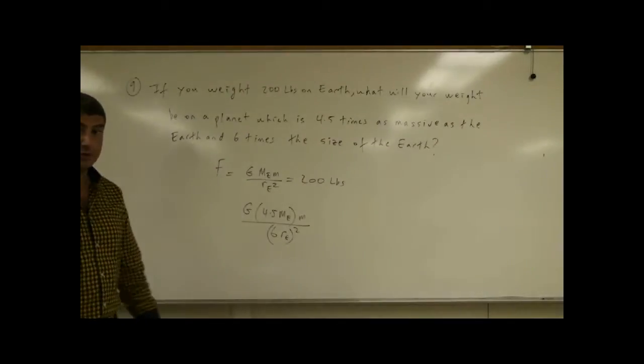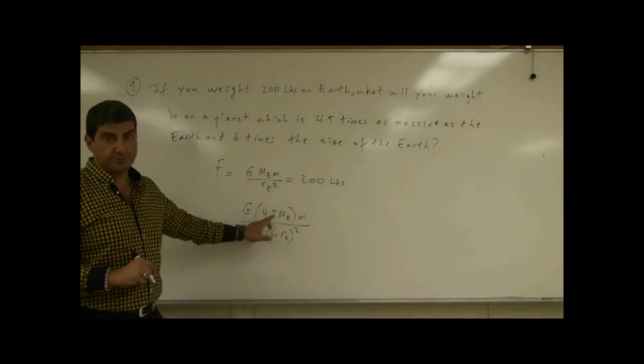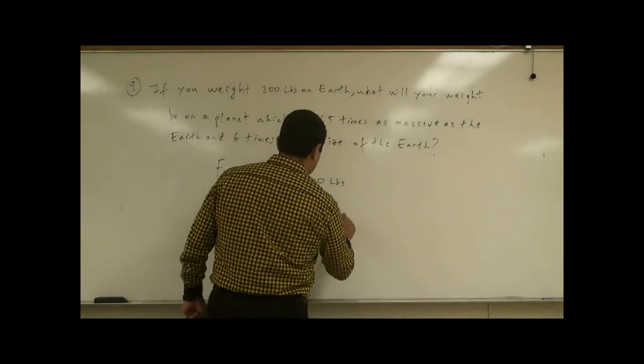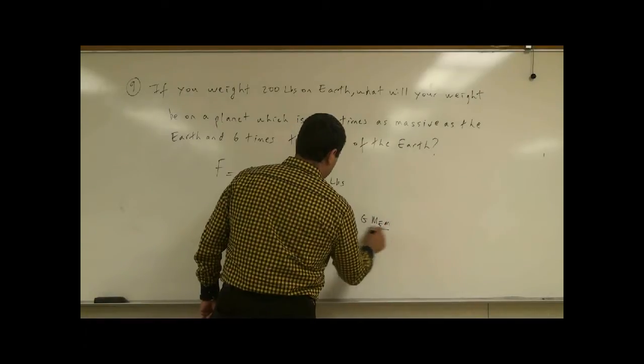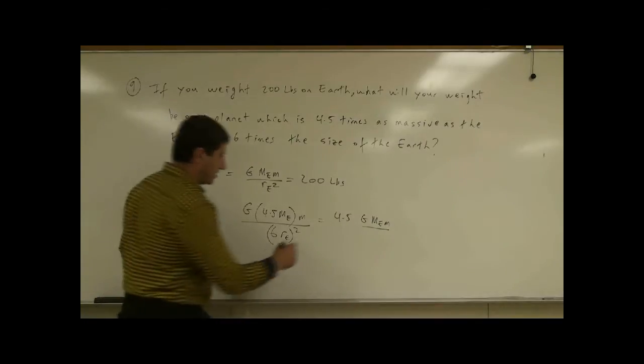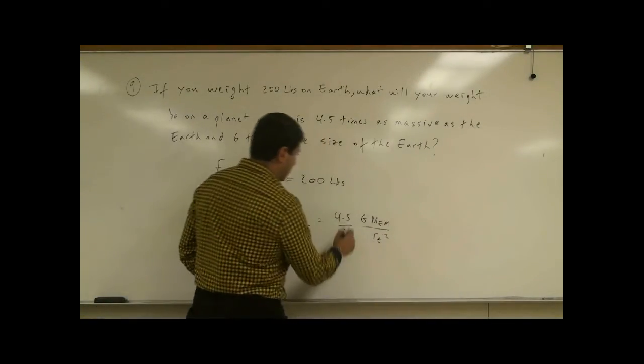It's important. The radius has to be squared. The mass is not squared. So then you're going to have here 4.5 G M_E M over, then six squared is what? Six times six, that's 36.